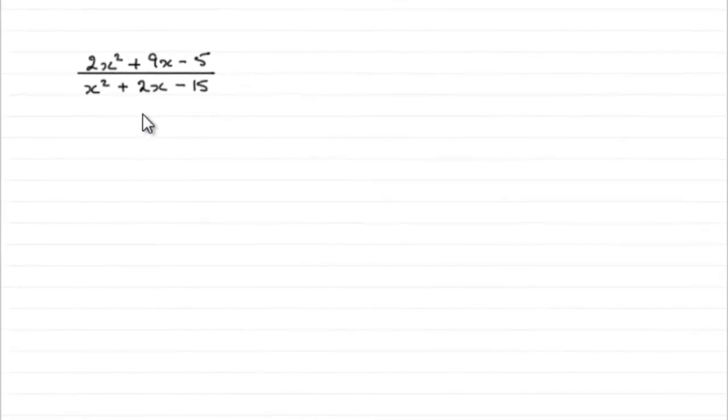We're given this expression here to simplify. So how do we do that? What we need to do is always factorize the top and the bottom so that we can aim to cancel out any common factors.